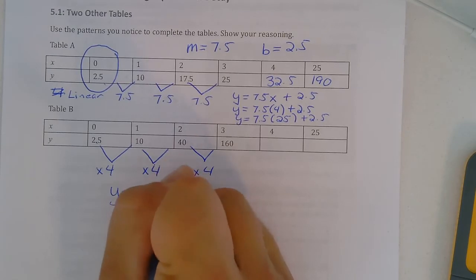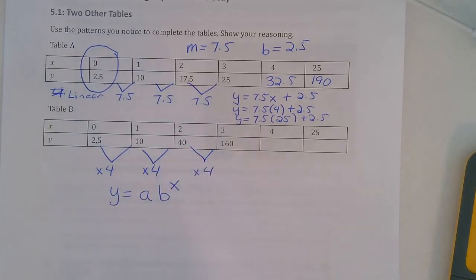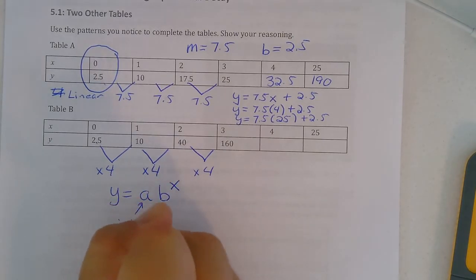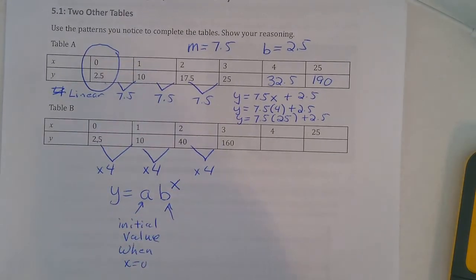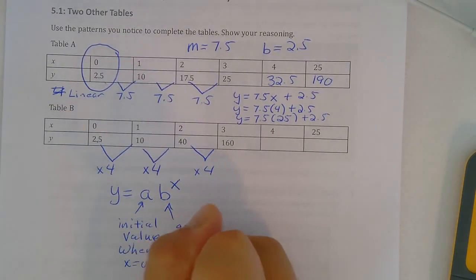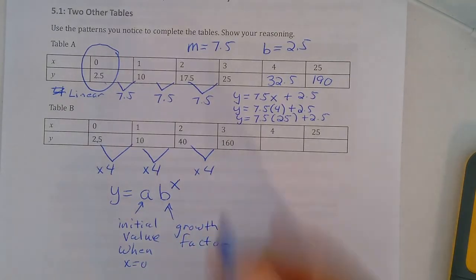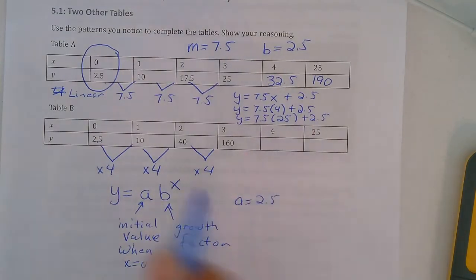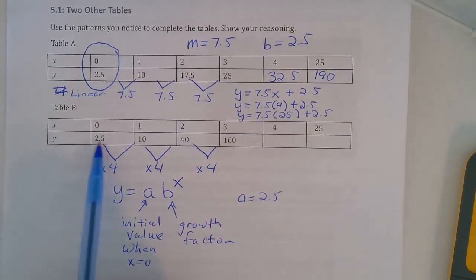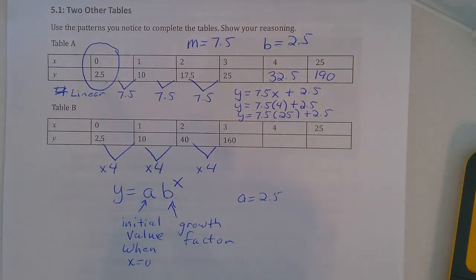So for an exponential function, remember our equation is of the form y equals a times b to the x. And a is our initial value, and that is when x equals 0. And b is our growth or decay factor. So in this situation, the initial value a, y equals 2.5 when x is 0, we start at 2.5. And our growth factor, what we multiply by, is 4.